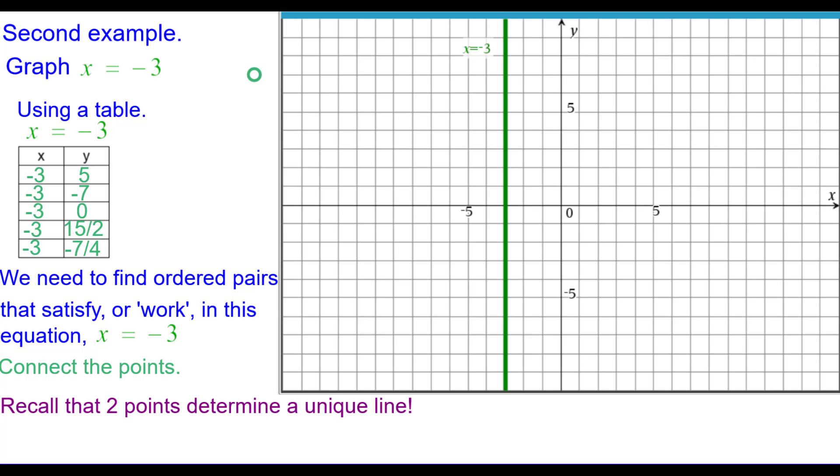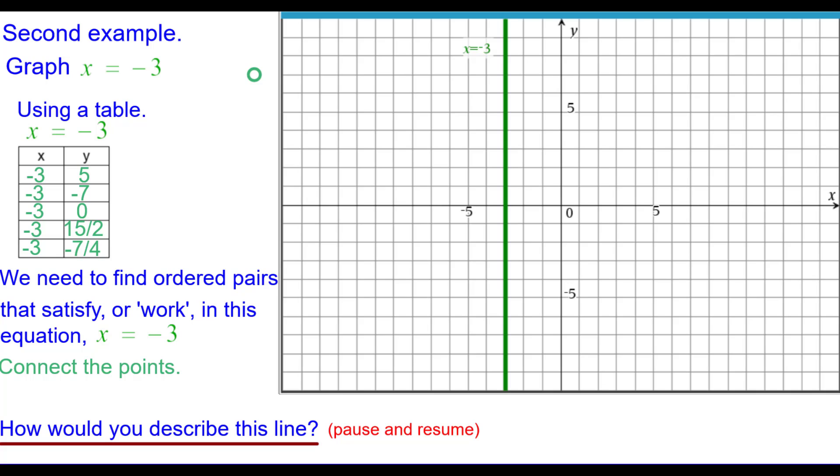Recall that two points do determine a unique line. And how would you describe this line? Press pause and resume when you're ready. It is a vertical line. It is a line that has no slope. Or we can say the slope of the line is undefined. And this is not a function.